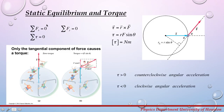For an object to be at static equilibrium, we must meet two conditions. The sum of all forces acting on the object is equal to zero, and the sum of all torques acting on the object is equal to zero.